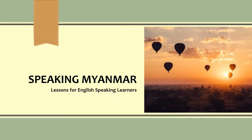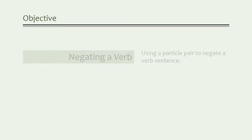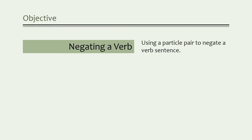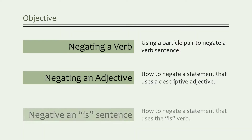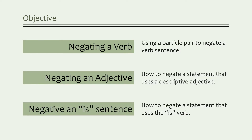Speaking Myanmar: Lessons for English-speaking learners. Negative particles. In this lesson, you're going to learn how to say things like 'I'm not coming,' a negative sentence that contains a verb. You'll also learn how to negate an adjective to say things like 'I'm not hungry.' I'll also show you a special rule used to negate a Myanmar IS sentence, which identifies what something is, not a description of condition or feeling. Let's get started.